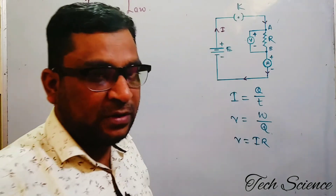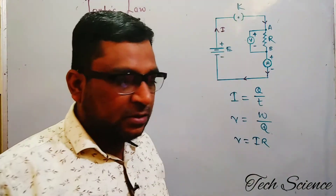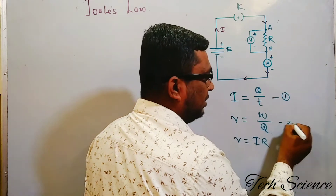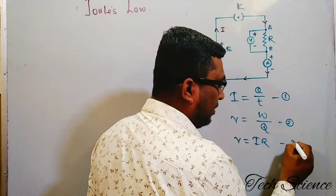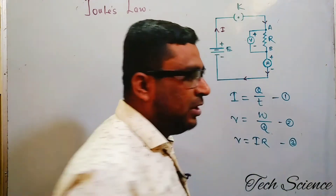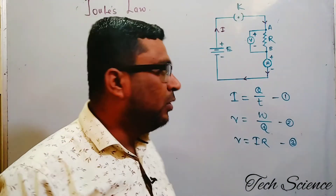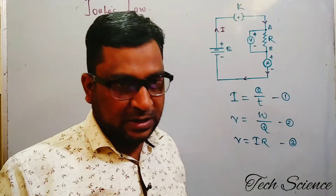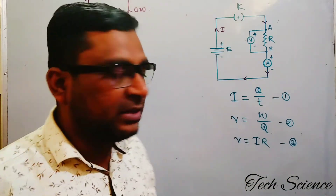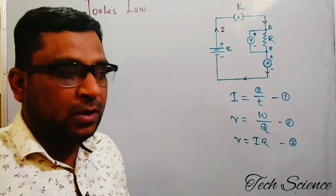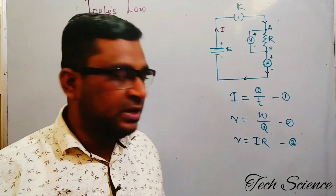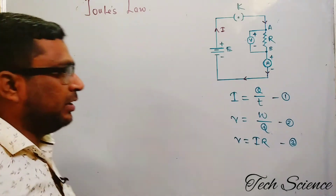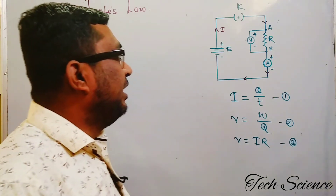Ohm's Law gives us V = IR, or equivalently I = V/R. You must know these three things: first, electric current; second, electric potential difference; and third, Ohm's Law. I assume that you know all three basic concepts clearly. If not, you can see the videos on Tech Science to get a clear idea of what electric potential difference, current, and Ohm's Law are.